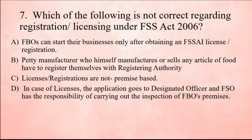Next question: Which of the following is not correct regarding registration and licensing under FSS Act 2006? The Act has given various guidelines for registration and licensing of food businesses. Statement one — FBOs can start their business only after obtaining an FSSAI license or registration — is correct. Statement two — petty manufacturers who manufacture or sell any article of food must register with the registering authority — is correct. Statement three — license registrations are not premise-based — is the wrong statement. Statement four — for license, the application goes to the designated officer and the FSO carries out inspection of FBO premises — is correct.